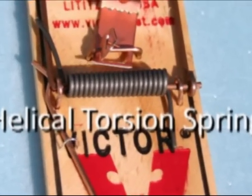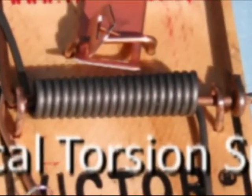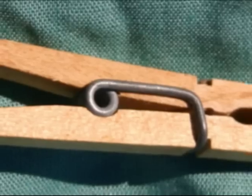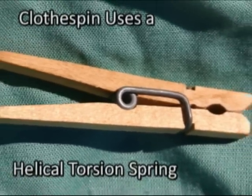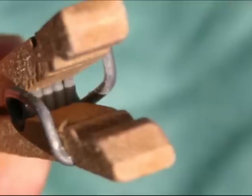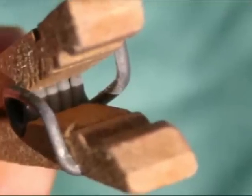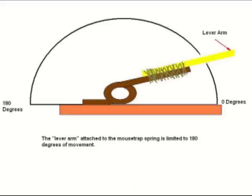The energy for the mouse trap car is supplied by a wound helical torsion spring in the mouse trap. Another common application for this type of spring is in the clothespin. In the mouse trap, the spring can only rotate 180 degrees, which is one half turn.